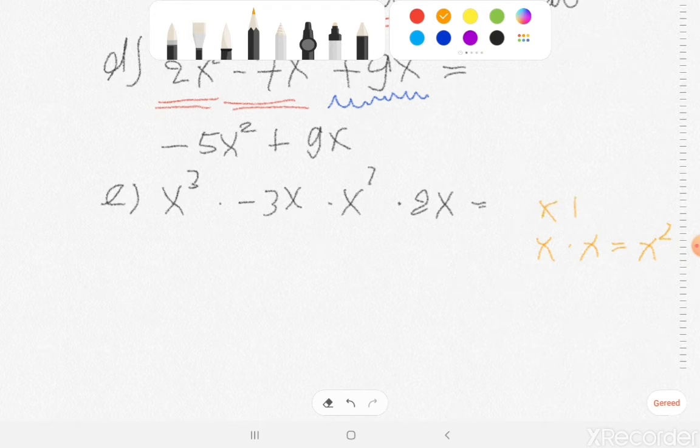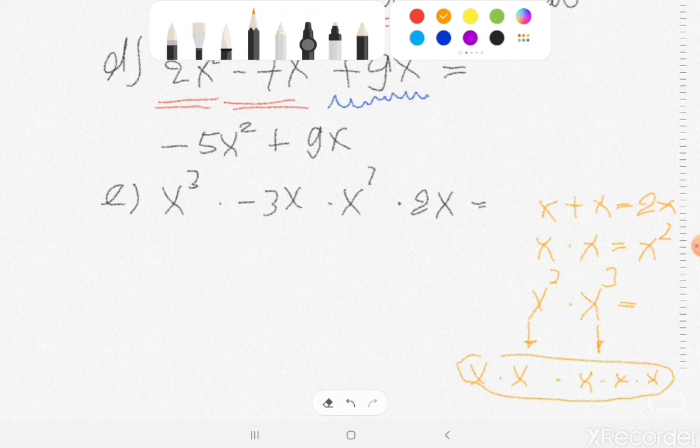So please see the difference. x plus x is 2x and x times x is x squared. So if we know that x times x is x squared, maybe we also know what x squared times x to the power of 3 is. Now what means x squared? That's also x times x. If we look at x to the power of 3, it means x times x times x. Together we find in total 5 x's. So x squared times x to the power of 3 is also x to the power of 5.